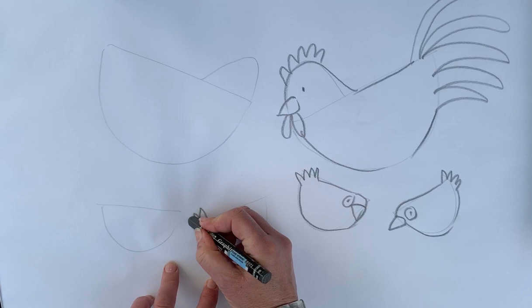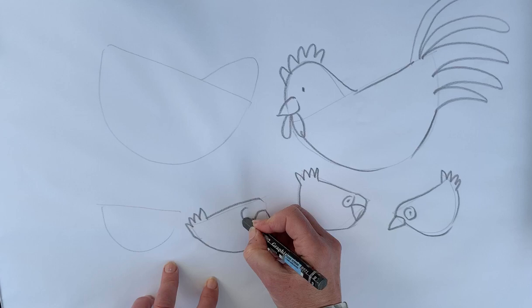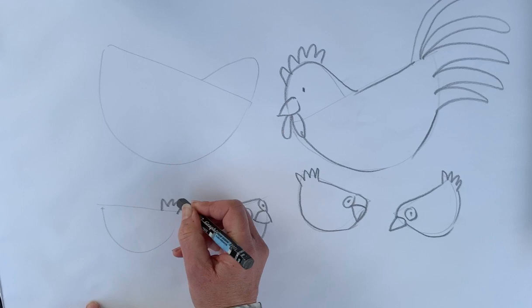You can't really see their wings because they're only little. This one's going to have two eyes. They look a bit bonkers.